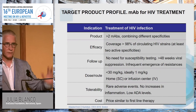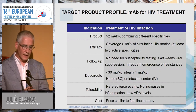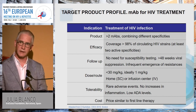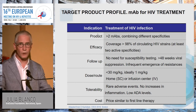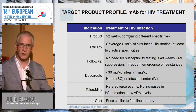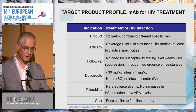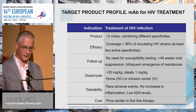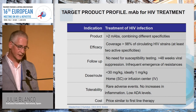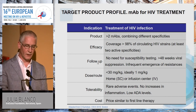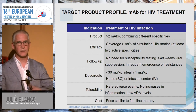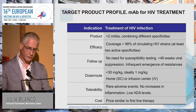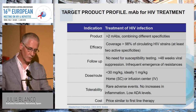Regarding the target product profile for antibodies in HIV treatment—also presented by Dan Kuritzkes at CROI—the product should be a combination of more than two antibodies with different specificities, achieving 98% coverage with always two antibodies active against any single isolate to avoid resistance. The clinical follow-up should be as simple as possible, with no need for susceptibility testing, and viral suppression should be long-lasting with no resistance emerging.